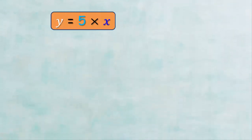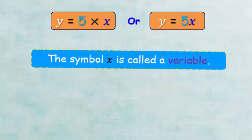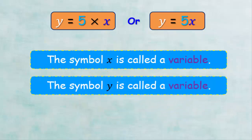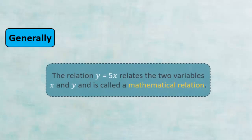We can express the total price of X number of books as: Y equals 5 times X, or Y equals 5X, such that Y refers to the total price of books and X refers to the number of books. In general, we can say that the relation Y equals 5X relates the two variables X and Y and is called a mathematical relation.